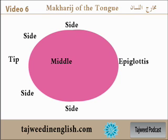Al-lahah is the closest area to the mouth. Every makharij, every point, has certain letters coming from there. The Arabs used mainly the tongue for most of the sounds and most of the letters in Arabic language.